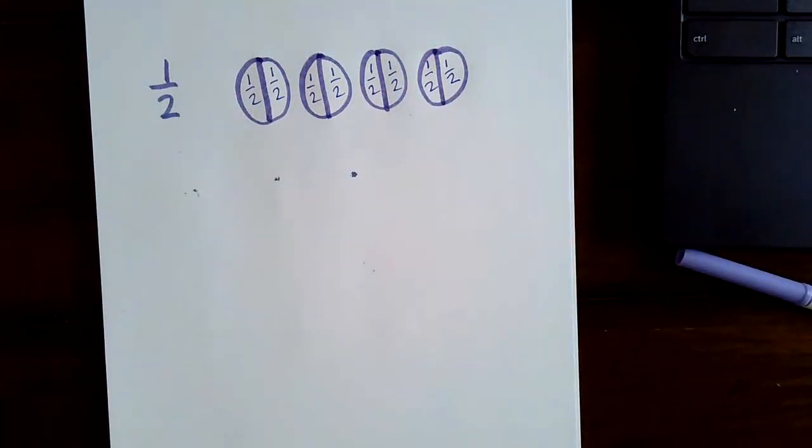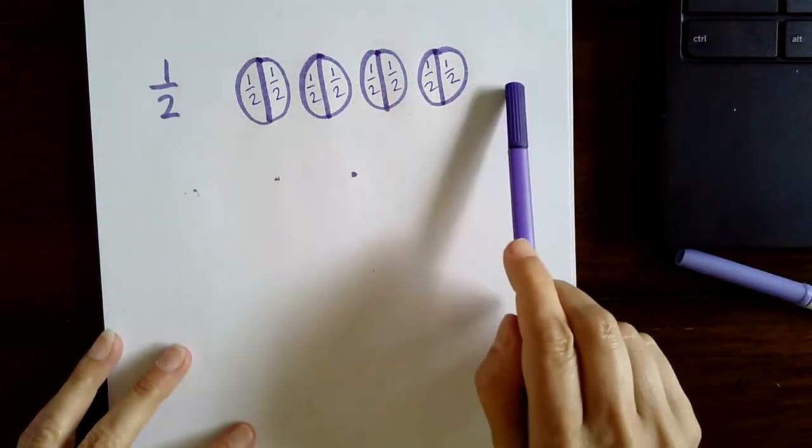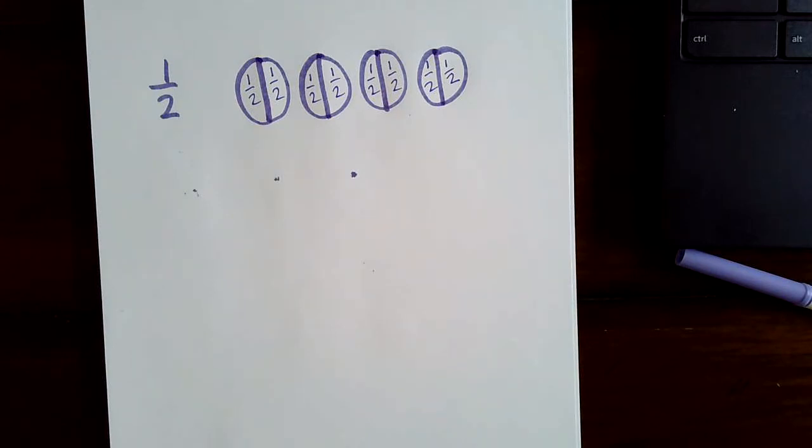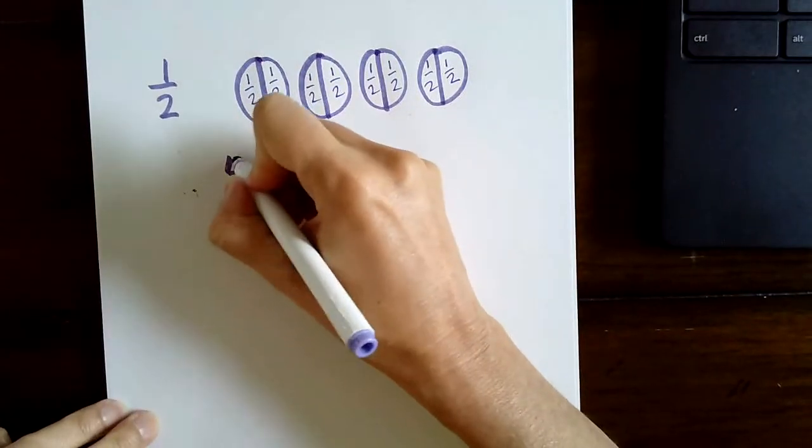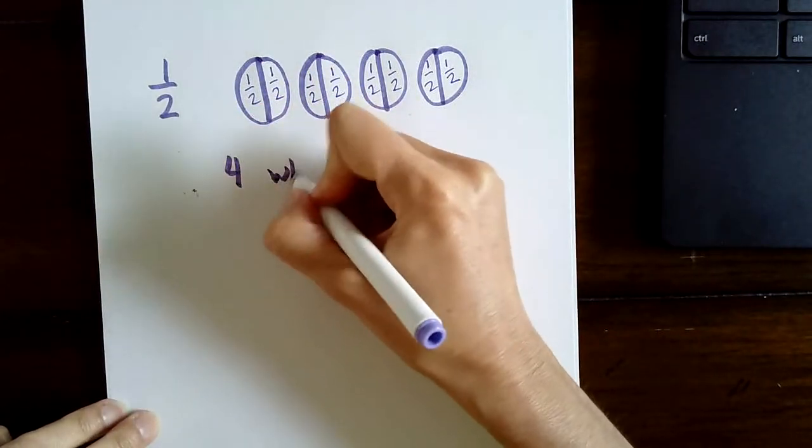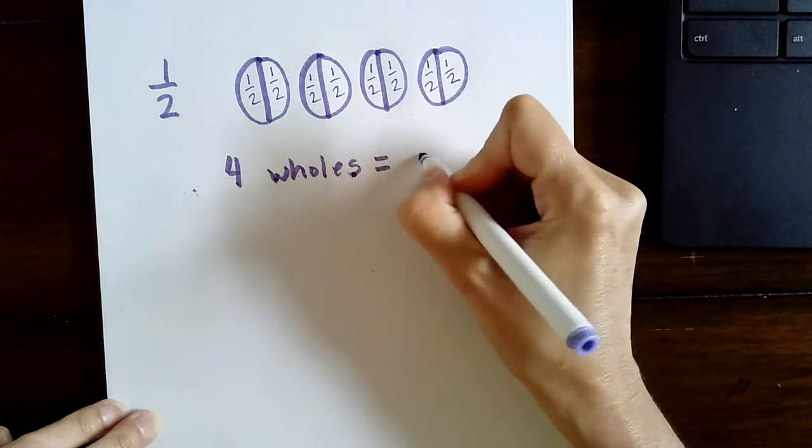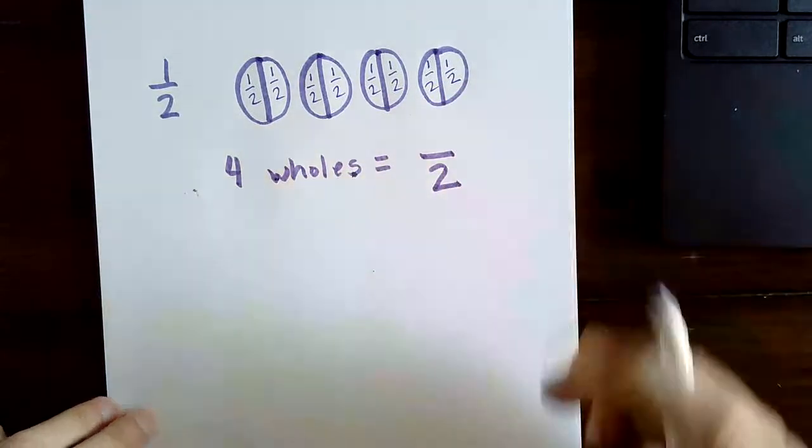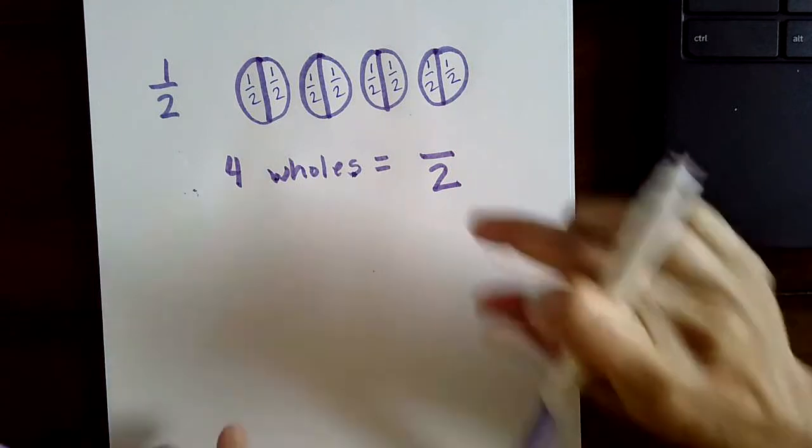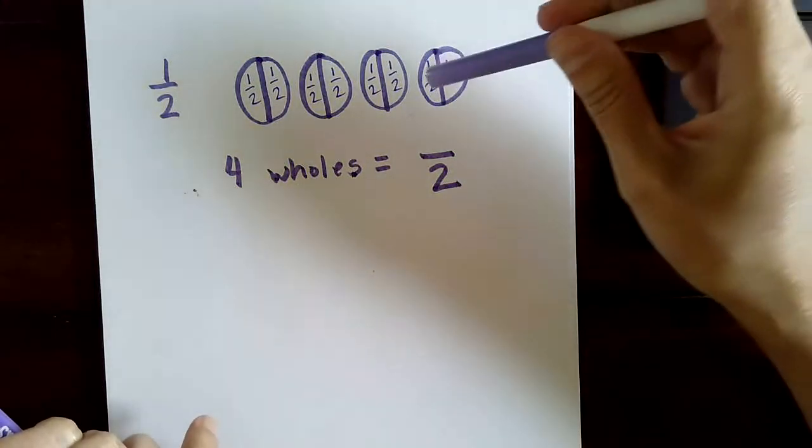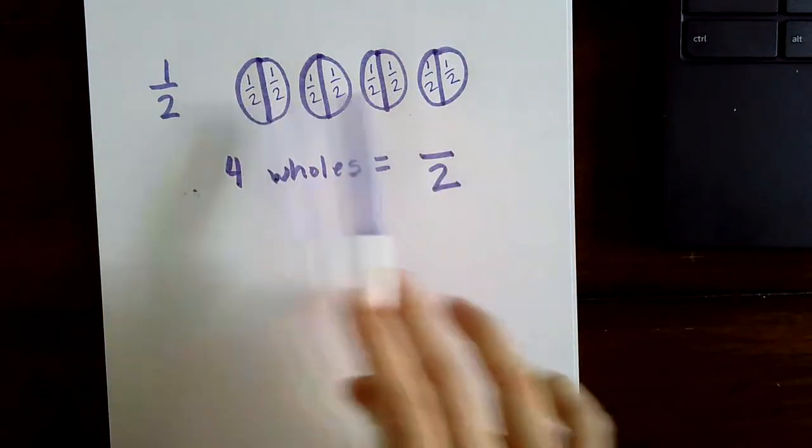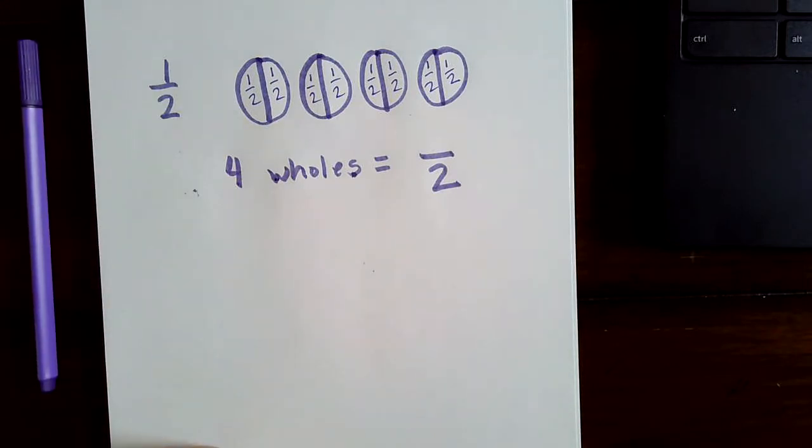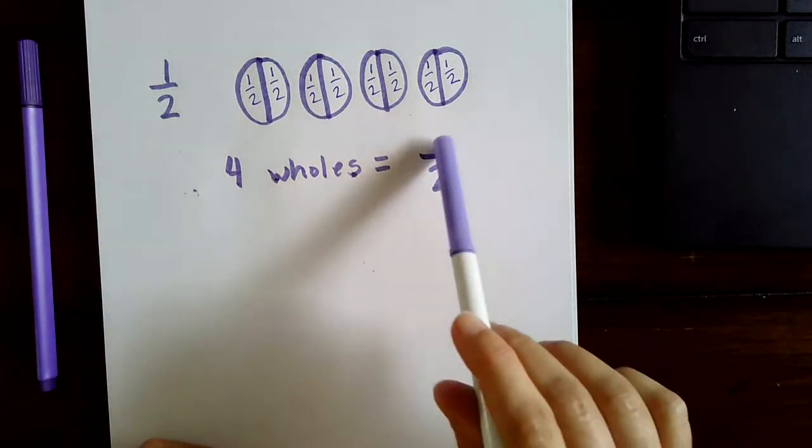Now I want you to write the fraction of how many halves are in four wholes. Go ahead and write that and let's see if you have it correct. Four. I'm just going to write out the word wholes is equal to how many halves. Now notice that our denominator is going to be a two because we're divided into two equal parts.